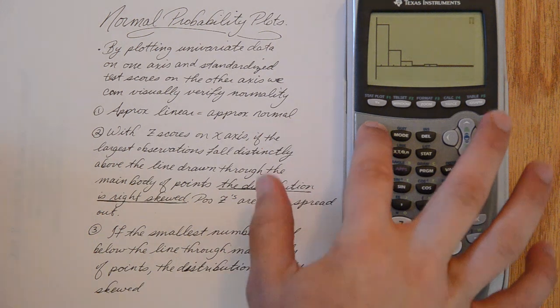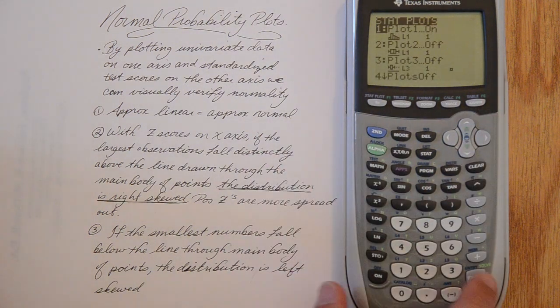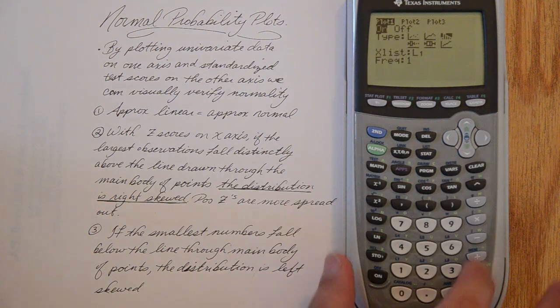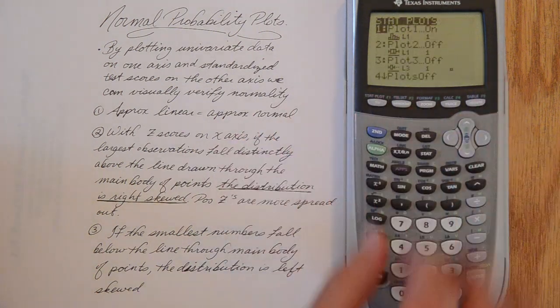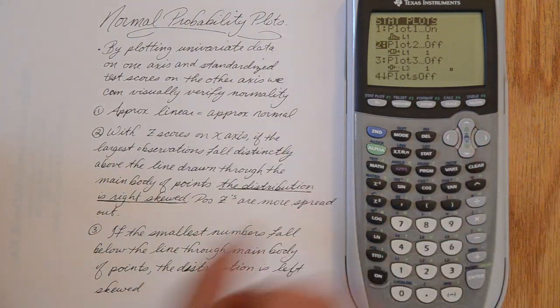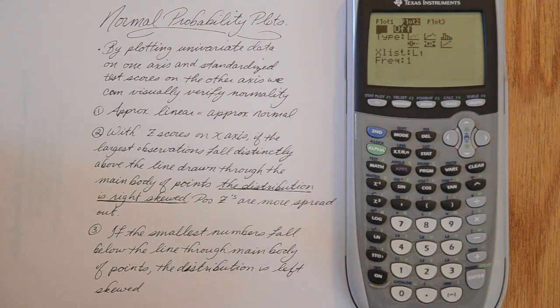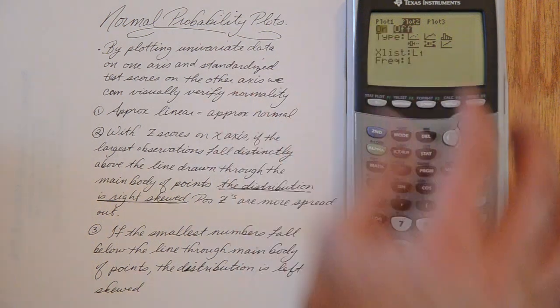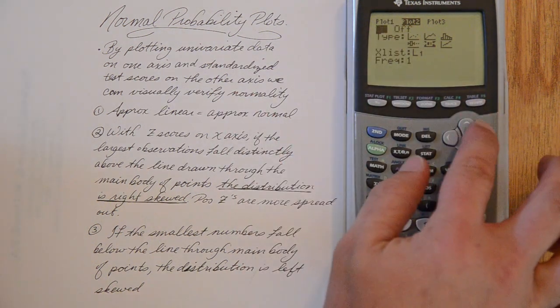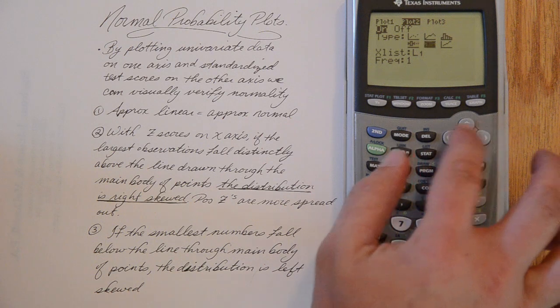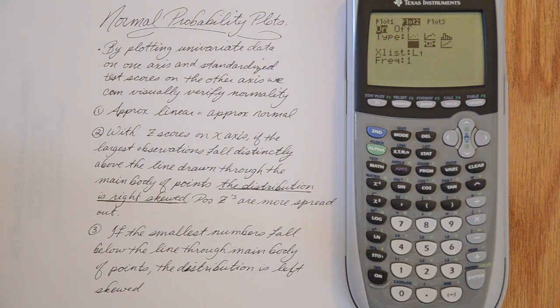And for practice you may want to, when you make a histogram, turn two plots on. One for the histogram and turn another plot on as a box plot and overlay the two. So I am going to turn plot two on. Turn it on. Select, I am going to select a regular box plot even though normally I prefer modified box plots.